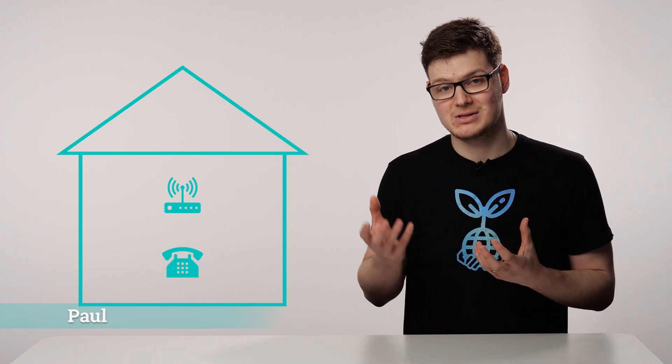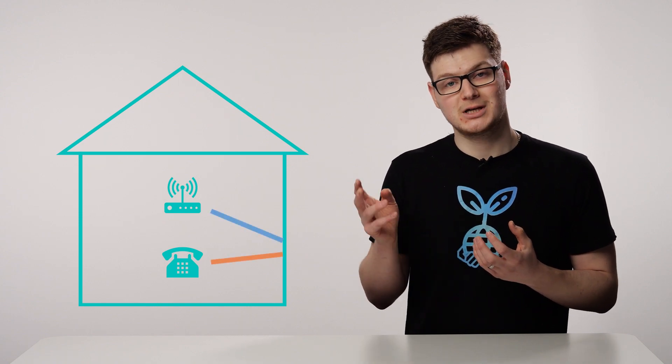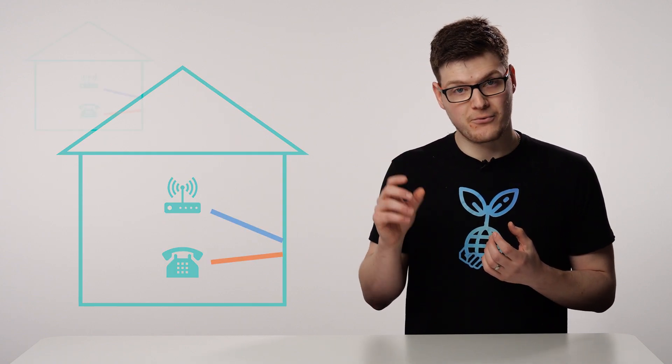So to start with we'll begin inside your property. Inside your property you'll have your broadband router and your telephone, both of which will connect into a phone socket. From this phone socket they will run down a single copper cable to the green cabinet.